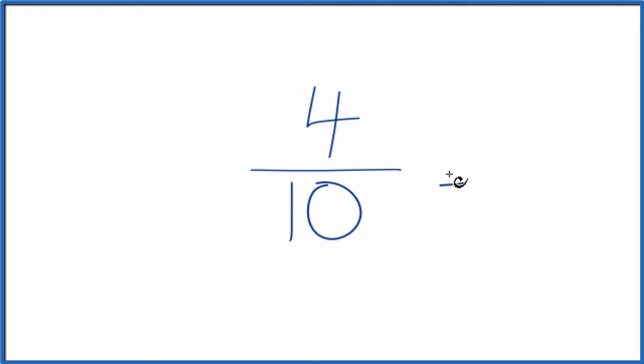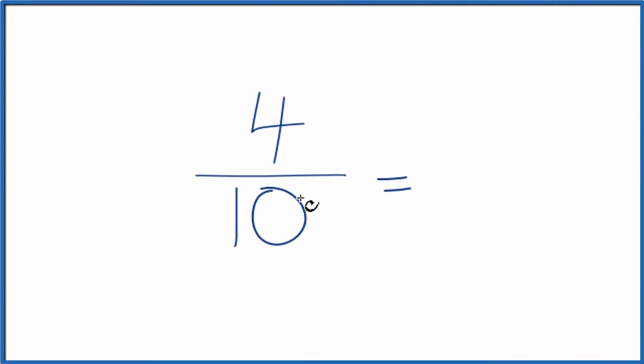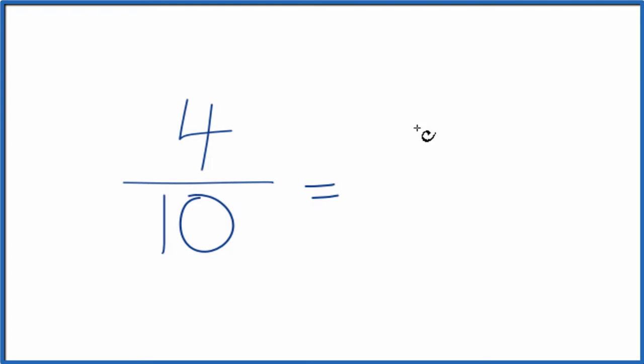So what we could do, we could multiply the numerator and denominator by 2. 4 times 2 is 8. 10 times 2 is 20. So 8 twentieths, that's an equivalent fraction to 4 tenths. Divide 4 by 10 or 8 by 20, you get the same value, the same decimal answer, which is 0.4.